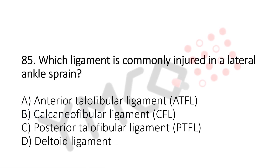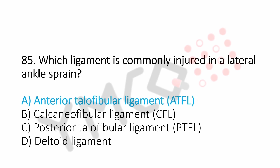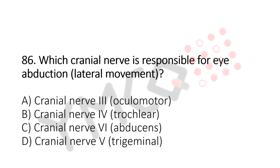Which ligament is commonly injured in a lateral ankle sprain? Option A: anterior talofibular ligament. Option B: calcaneofibular ligament. Option C: posterior talofibular ligament. Option D: deltoid ligament. And the answer is option A, anterior talofibular ligament. Now let us move to question number 86.